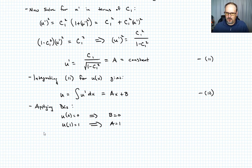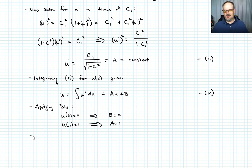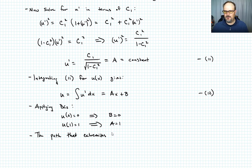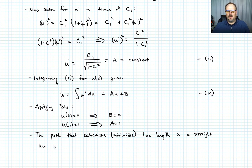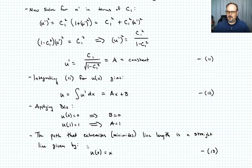So our conclusion is that the path that extremizes — and in this case minimizes — the line length is a straight line given by u of x equals x — call that equation 13. This is our extremizing function, and what we've just shown is that the shortest distance between two points is a straight line.